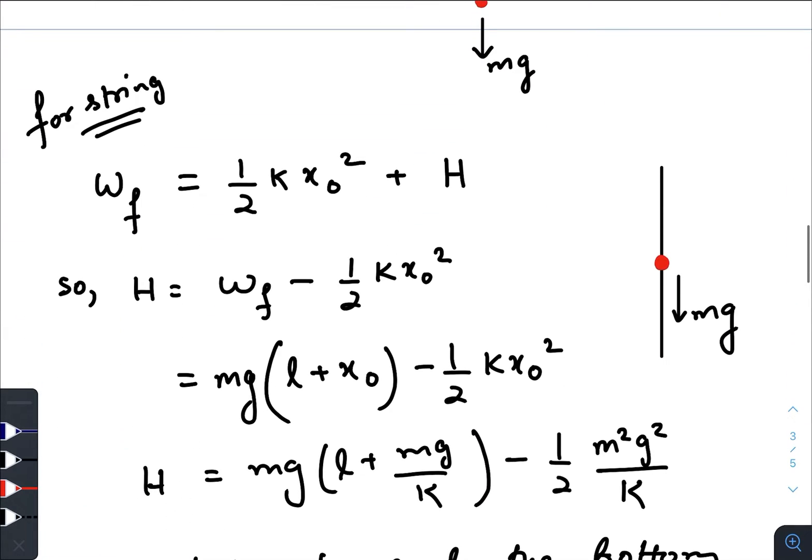Now we need to find out the heat loss during this whole journey. We can tell that the work done by the mass on the string, a part of that is utilized to increase the potential energy of the string, and the rest of the part is lost as heat. So heat equals to work done by mass M minus half K X naught squared.